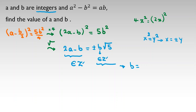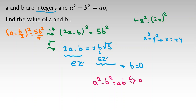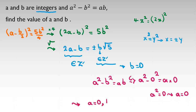The only value of b for which b times root 5 is an integer is b equals zero. For any other integer b, b root 5 is irrational. So b must equal zero. Substituting back into the main equation: a squared minus 0 squared equals a times 0, so a squared equals zero, meaning a equals zero. The only solution is a equals zero and b equals zero.